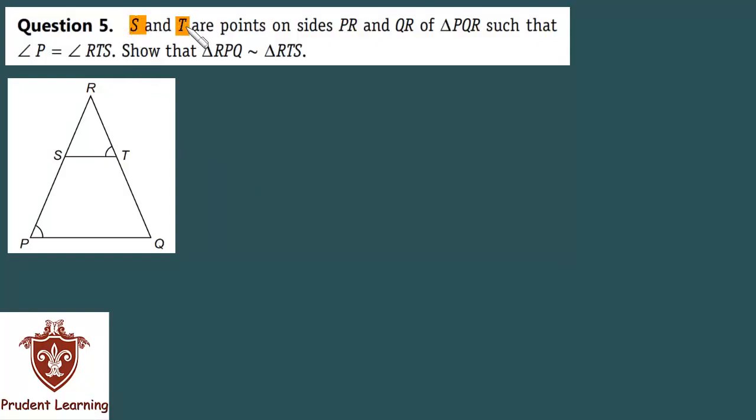S and T are points on sides PR and QR of triangle PQR such that angle P is equal to angle RTS.